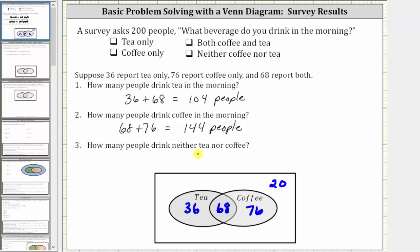Finally, how many people drink neither coffee nor tea? That's the number of people outside both sets, which we determined is 20. So 20 people surveyed drink neither tea nor coffee. I hope you found this helpful.